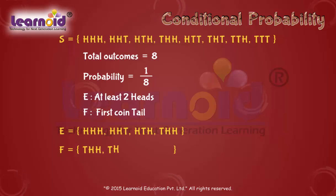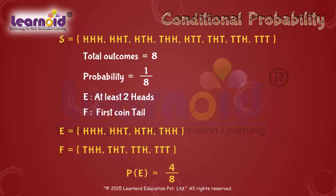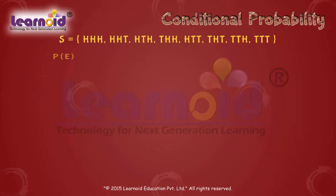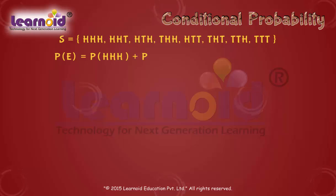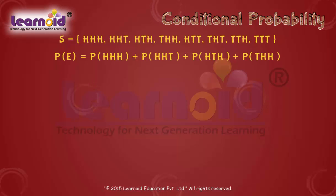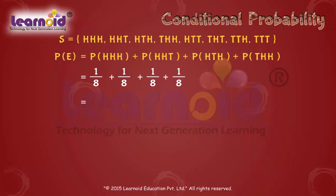And tail-head-head. The probability of event E will be 4 by 8, because out of total 8 events the outcomes in E are 4. This gives us probability of event E equal to 1 by 2.